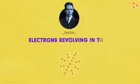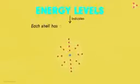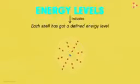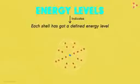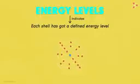Niels Bohr suggested that the electrons revolving in these orbitals do not radiate energy. This is justified when we use the term energy levels. Because it indicates that each shell has got a defined energy level. That means when the electrons revolve in these shells, they do not liberate any form of energy.